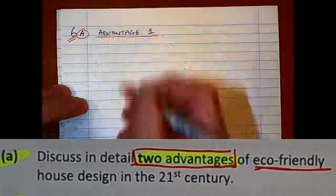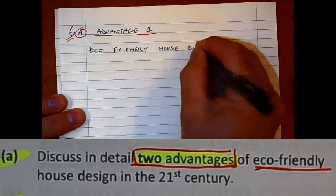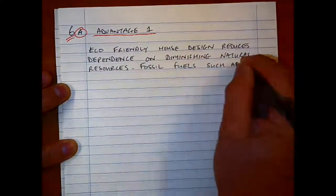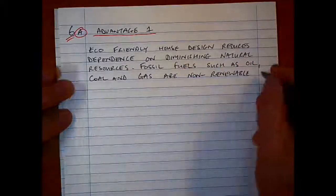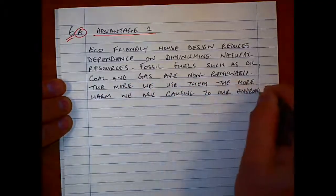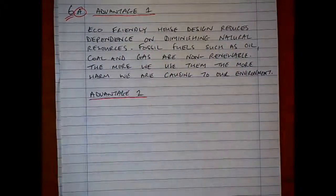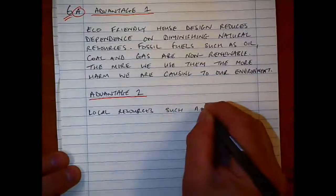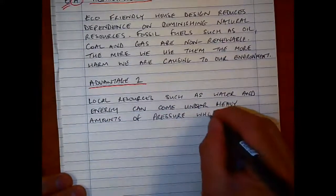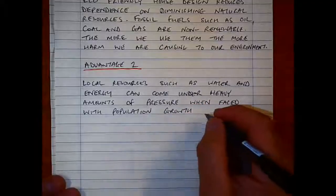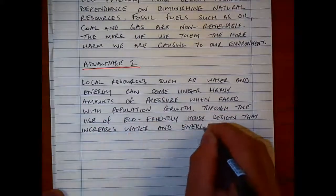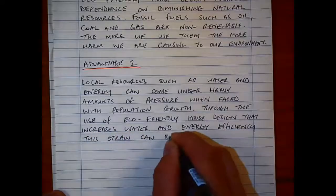The first part, Part A, asks for two advantages of eco-friendly house design in the 21st century. The first one is that eco-friendly house design reduces dependence on diminishing natural resources. Fossil fuels such as oil, coal, and gas are non-renewable, and the more we use them the more harm we're causing to our environment, so reduction of CO2 from burning fossil fuels. The second advantage is that local resources such as water and energy can come under heavy pressure when faced with population growth, and through the use of eco-friendly house design that increases water and energy efficiency, that strain can be reduced.